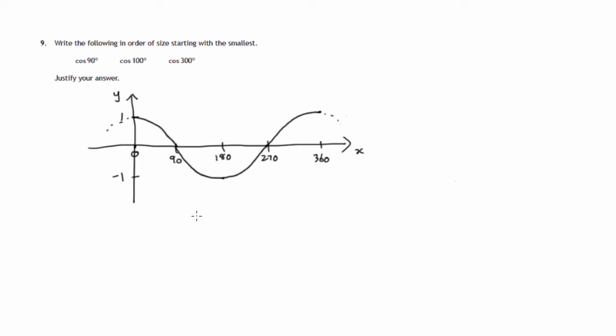So what are we asked to do? We're asked to compare the sizes of these values. Now, cosine of 90 is 0.